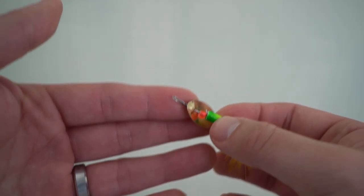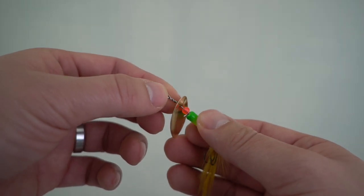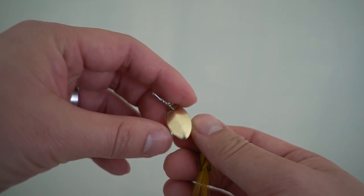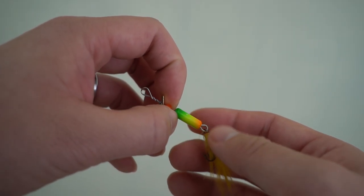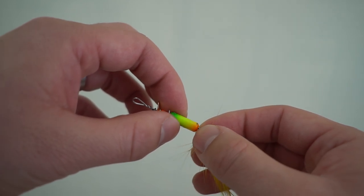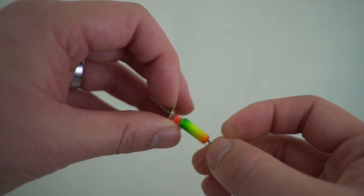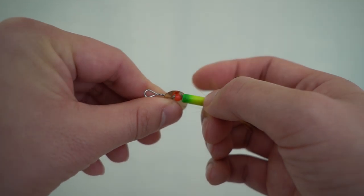Let's take a look at this inline spinner for a second. You have the loop on the top. Then comes your inline spinner blade. You have a bead. Then you have your body weight right here.